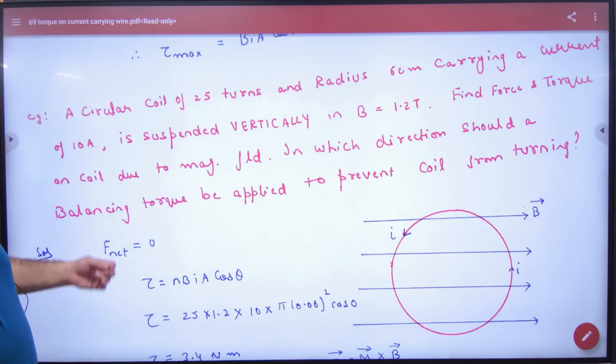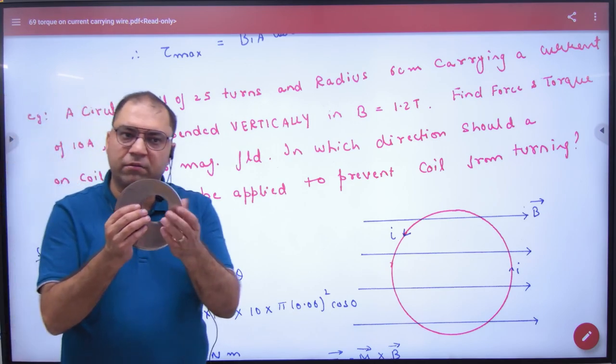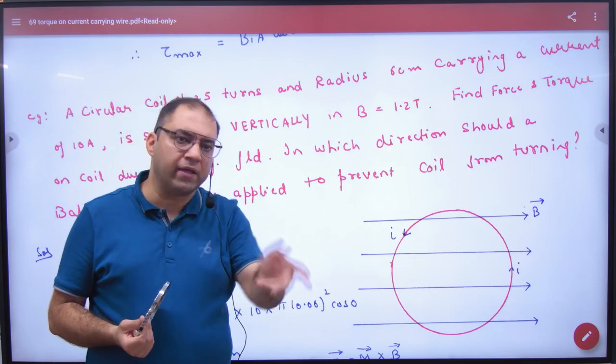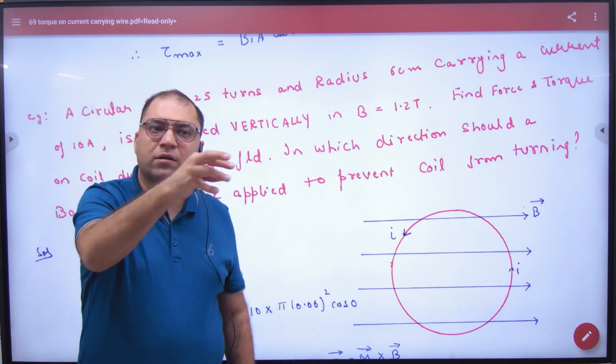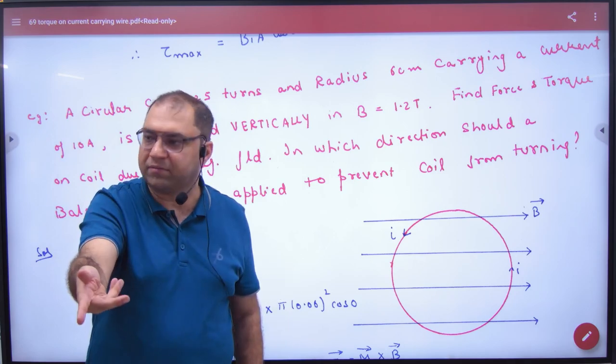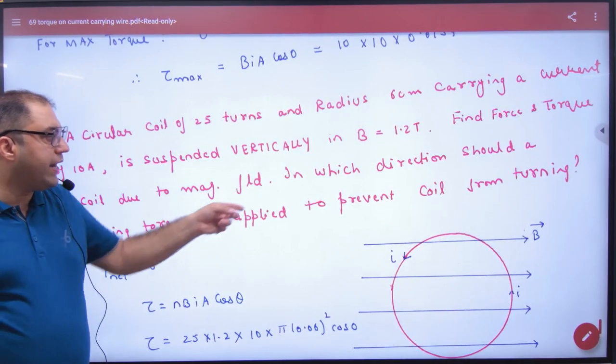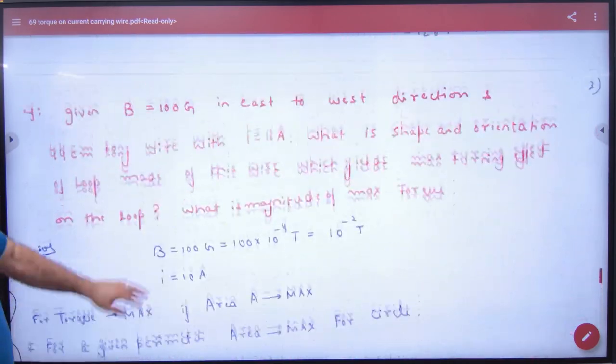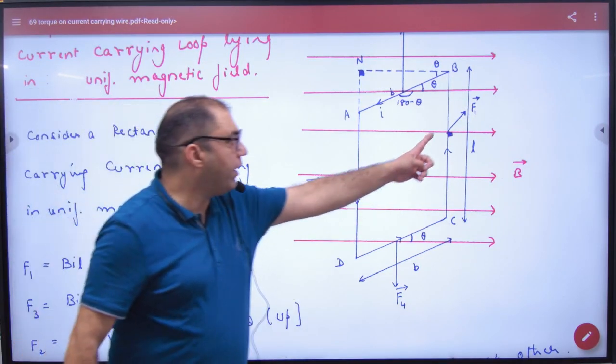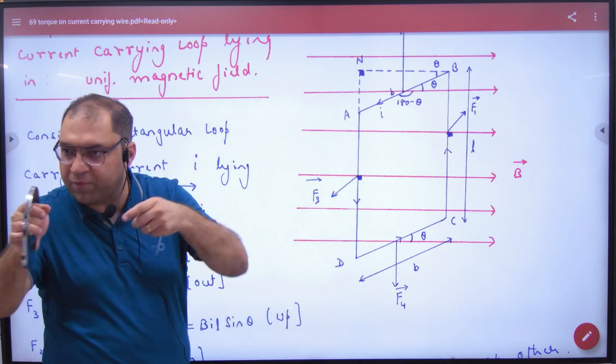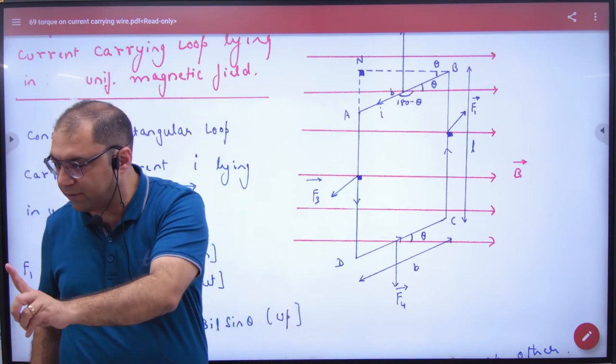So in this case, you have to tell in which direction should a balancing torque be applied to prevent coil from turning. So he says that maximum torque will act. If it will act, then I will put it up so it will not turn. So I will balance it. First of all, the current carrying loop, if in magnetic field, then torque will act. So this is what will be the torque formula? N B I A cos zero. And this also tells us what is the net force. So remember, torque of any expression which we have done in theory, net force always stays zero on the current loop because forces are equal and opposite, cancel each other. So net force is zero, but net torque is non-zero.